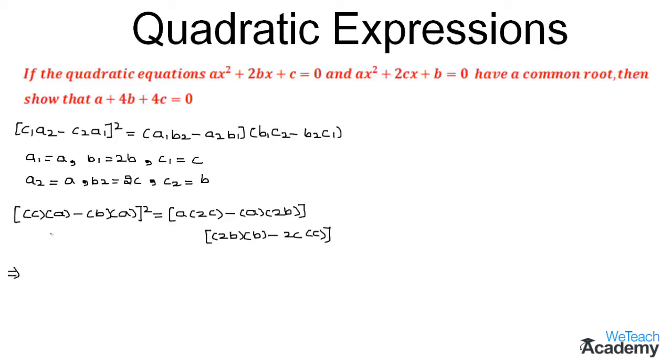We get (ac - ab)² = (2ac - 2ab)(2b² - 2c²). In the next step we can write (ac - ab)² as a²(c - b)². Coming to the right hand side, by taking 2a as a common factor we get 2a(c - b)(b² - c²).